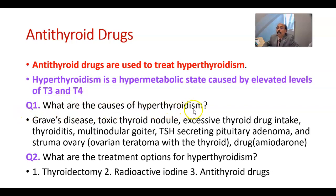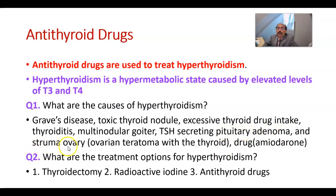What are the causes of hyperthyroidism? Hyperthyroidism is caused by Graves' disease, toxic thyroid nodule, excessive thyroid drug intake such as excessive intake of thyroxine, thyroiditis (inflammation of the thyroid gland), multi-nodular goiter, thyroid stimulating hormone-secreting pituitary adenoma, and struma ovarii — an ovarian teratoma with thyroid tissue.